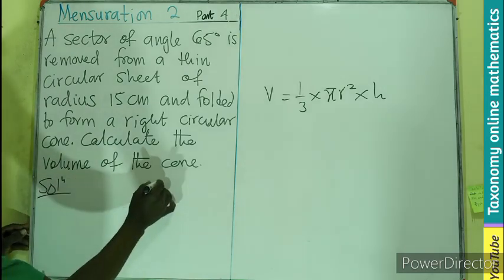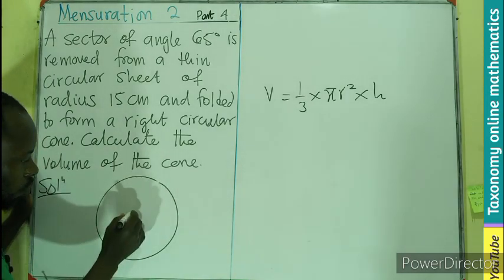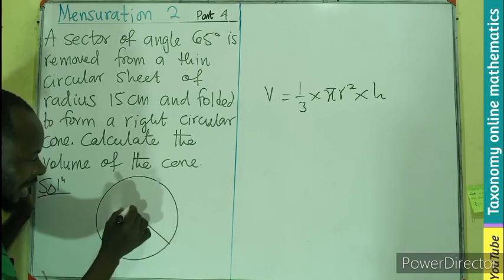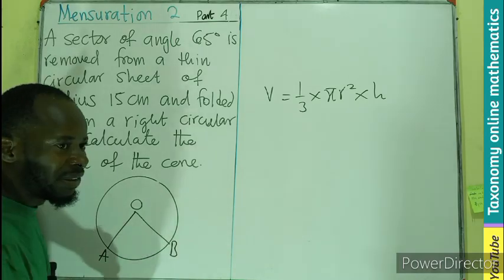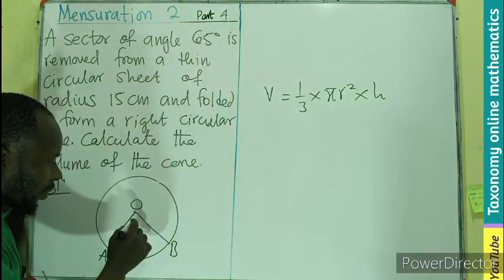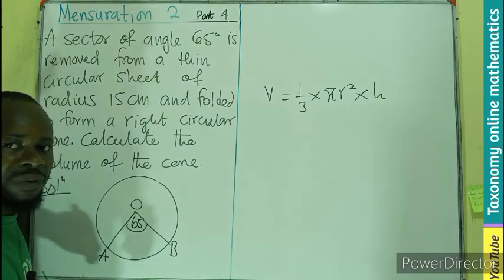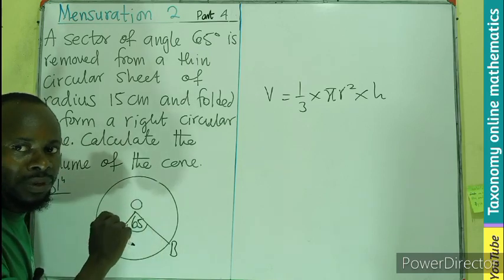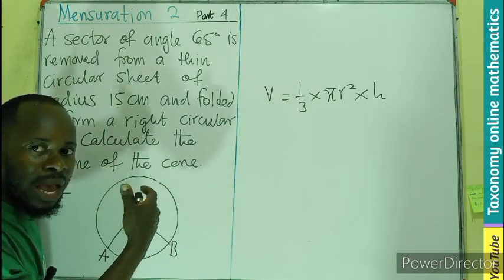A sector is just a region bounded by two radii and an arc. If this is the center, this is B, this is C — this angle is an acute angle at the center, here at 65 degrees. So it is this sector that is being removed and curved into a cone.